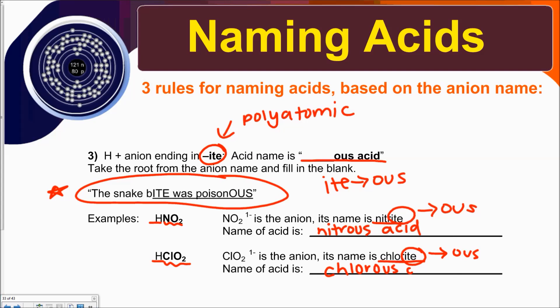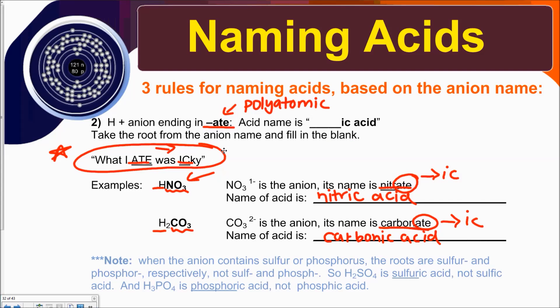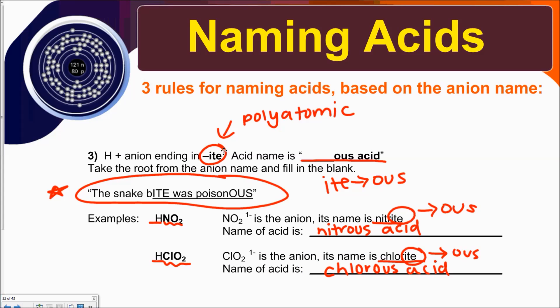To recap: Rule 1 — anions ending in "-ide" (non-metals on the right side of your periodic table) give hydro-blank-ic acids, like hydrochloric acid, hydrofluoric acid, and hydroiodic acid. Rules 2 and 3 apply to polyatomic ions only. If your polyatomic ion ends in "-ate," change it to "-ic" — nitrate becomes nitric acid, carbonate becomes carbonic acid. If your polyatomic ion ends in "-ite," change it to "-ous" — nitrite becomes nitrous acid, chlorite becomes chlorous acid, because the snake bite was poisonous.